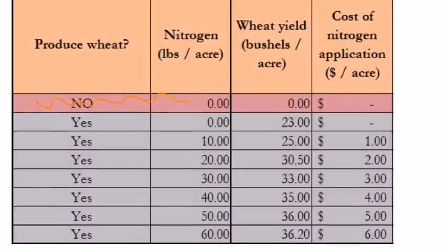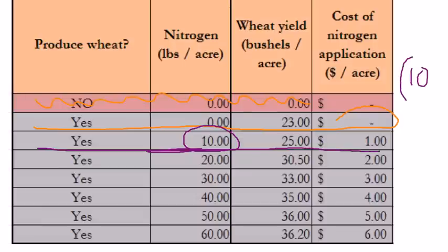If we're not producing wheat, of course we don't have any nitrogen cost. We might be producing wheat but decide not to put any nitrogen down — in that case, the cost of nitrogen application is zero. But suppose we want to put down 10 pounds of nitrogen per acre. The nitrogen price is 10 cents, multiplied by 10 pounds, giving us a value of one — it costs one dollar per acre to apply 10 pounds of nitrogen per acre.